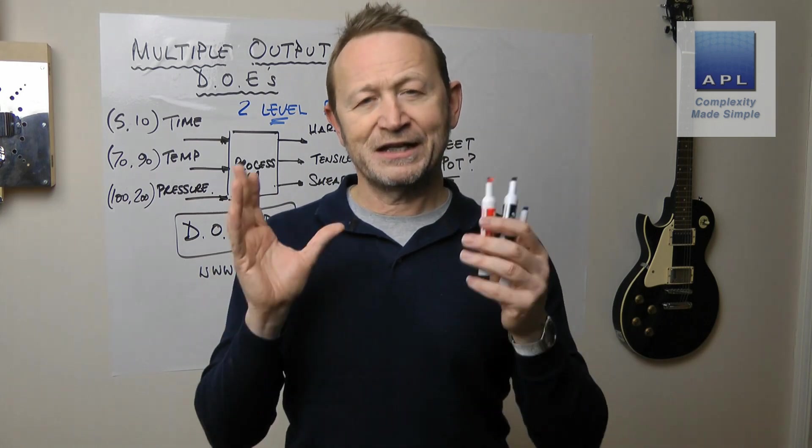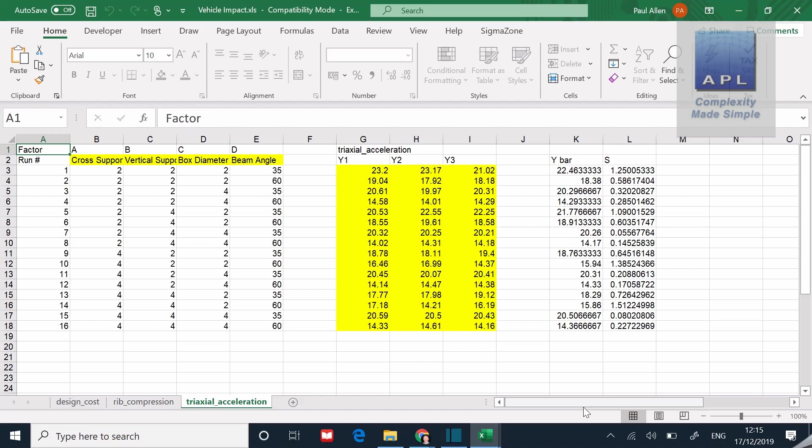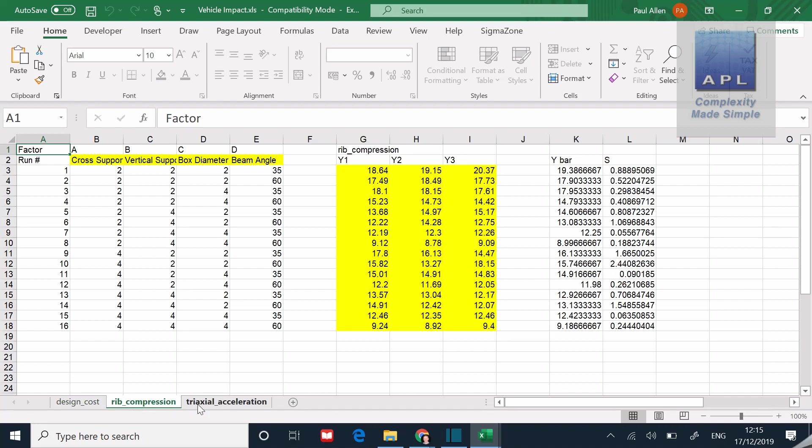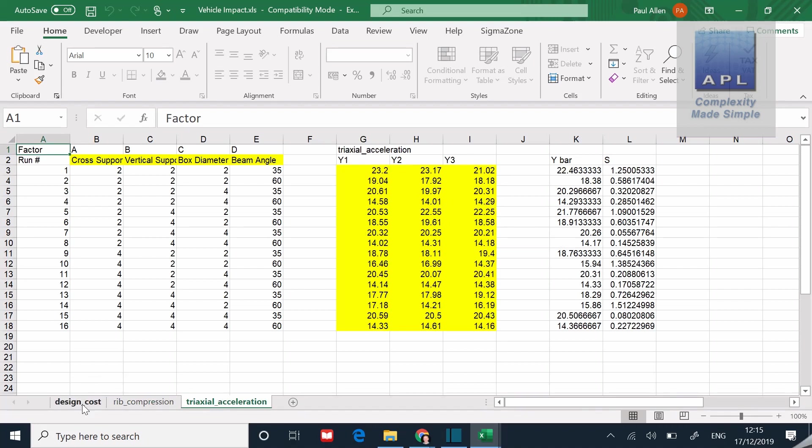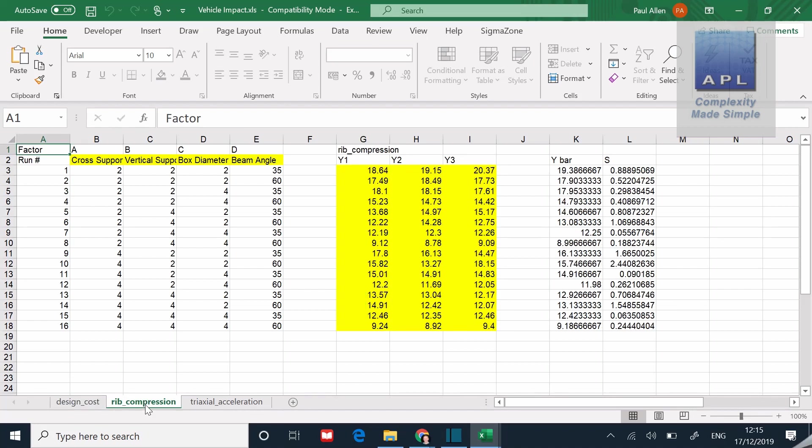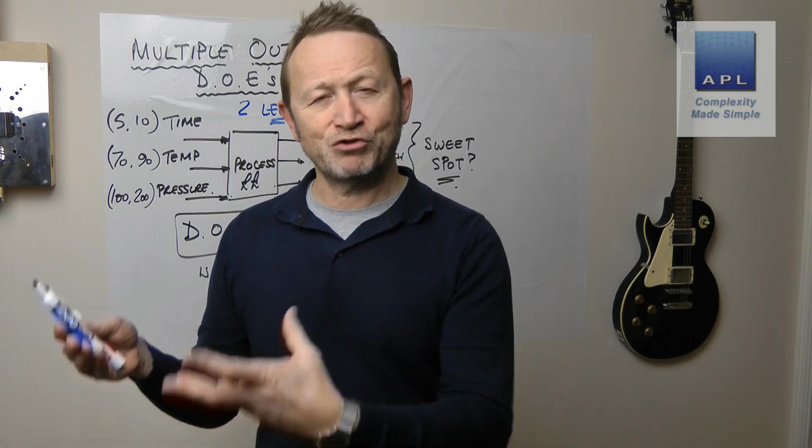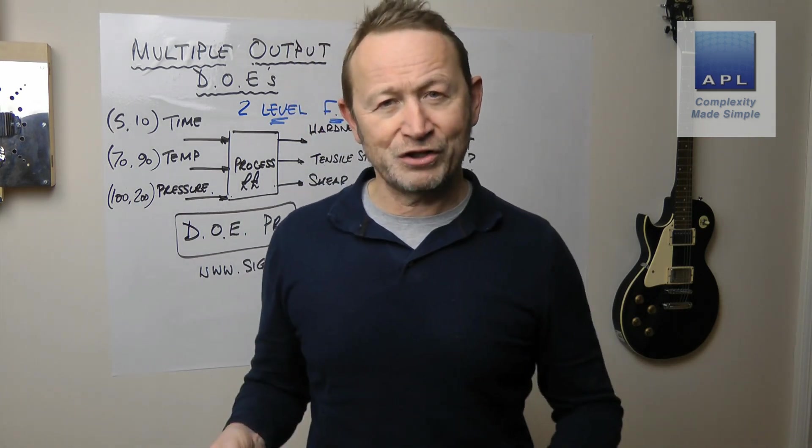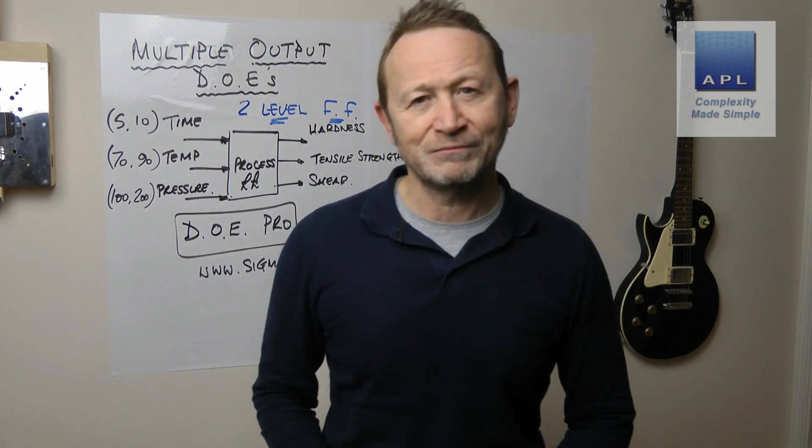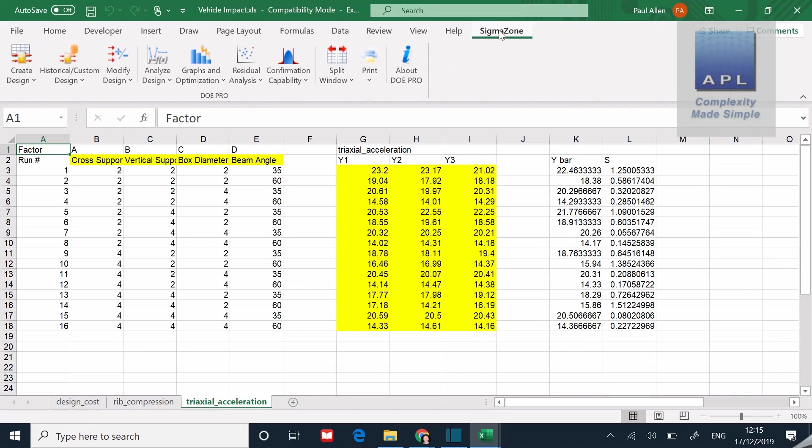Now, what I've got here is a little example from my simulator. I've got a little design example. It's actually got four inputs and three outputs. You can see here, here's the DOE table. It's a 16 run full factorial. And I have three tables of data: a table with design cost in it, a table with rib compression in it, and a table with triaxial acceleration in it. This little simulation is about designing a car. We're trying to make sure that the crash test dummy doesn't get damaged when the car is crashed, but also the cost of the design is reasonable so that the customer actually wants to buy the car. So we have four inputs, three outputs.